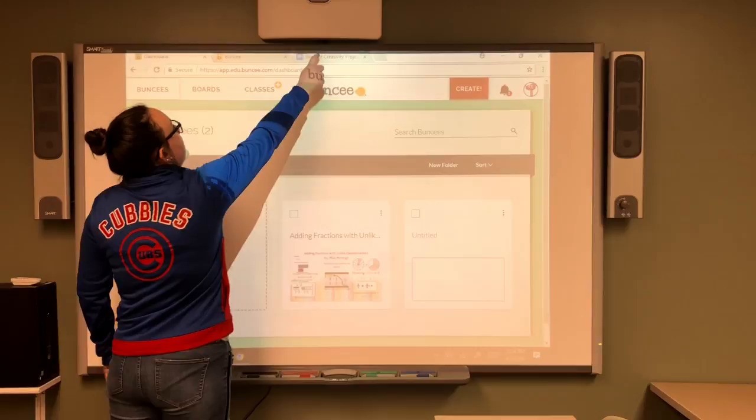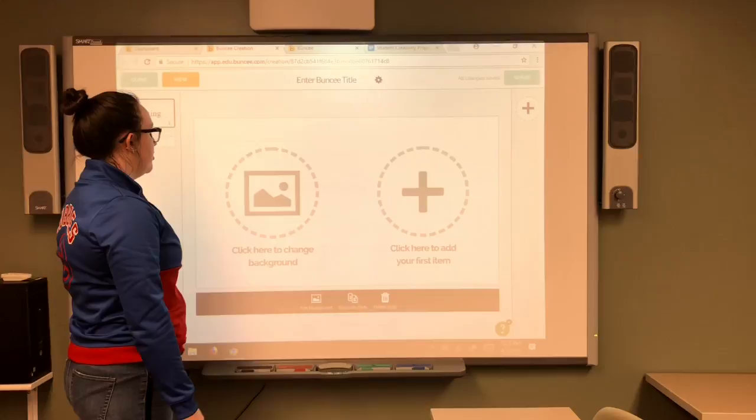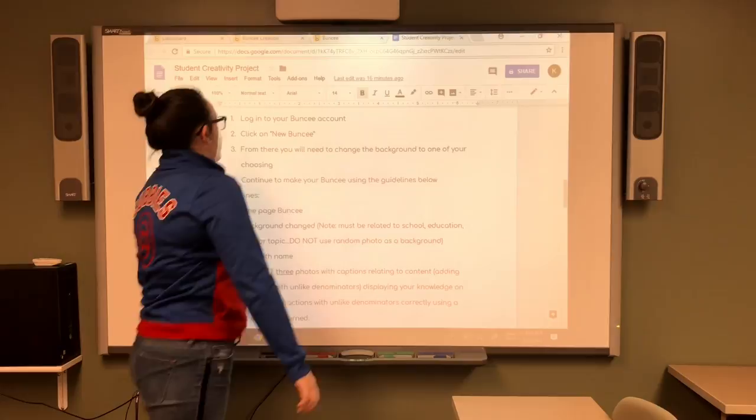And second, you'll click on New Buncee. As we go over here, here's this little button here, New Buncee. It will bring you to this page where you can change the background, add your first item. You'll only be doing one page for this Buncee, so don't go adding other slides to the Buncee.